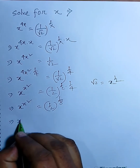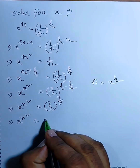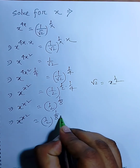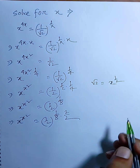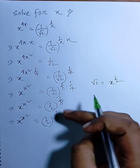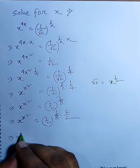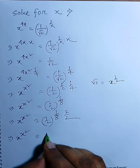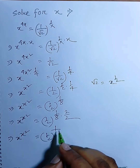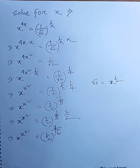Now, x to the power x squared equals 1 by 8, into 2 by 2. We know that 2 by 2 equals 1, so there is no change. Now I can say, x to the power x squared equals 1 by 2 by 16.